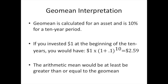It's important to note that the arithmetic mean will be at least greater than or equal to the geometric mean. So the arithmetic mean will be higher than or equal to the geo mean. In this example, the arithmetic mean would be at least 10%.